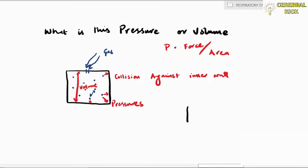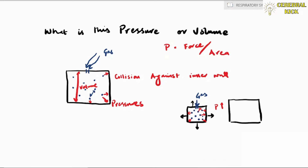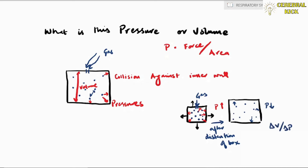What if I fill these 10 particles in a small box? The number of collisions would increase, so the pressure would increase. Wherever pressure increases, compliance decreases. But if this box expands in response to that pressure, it would increase in volume, the pressure would lessen, and it would be more compliant to the 10 particles.